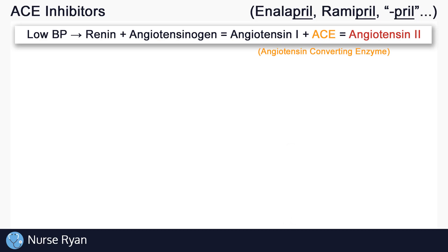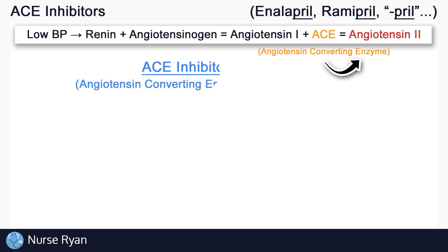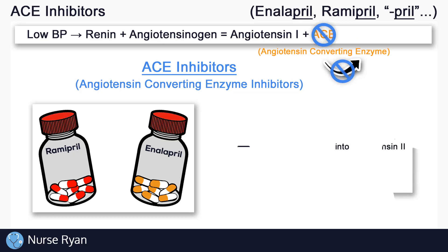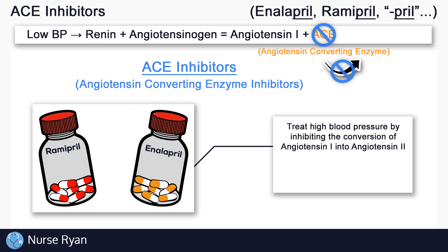Now let's talk about how ACE inhibitors work to inhibit the RAA system and lower blood pressure. ACE refers to the angiotensin converting enzyme. ACE inhibitors bind to and inhibit — or block — ACE from working. If we shut down this part of the system, we can't convert angiotensin 1 into angiotensin 2, so we get stuck at angiotensin 1, which doesn't do anything on its own, and we don't get any of those blood pressure raising effects.